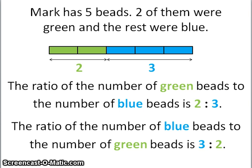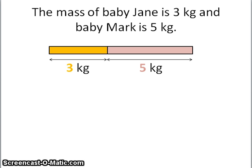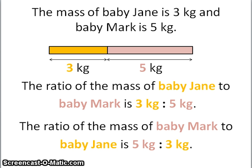Let's look at another example. The mass of baby Jane is 3 kilograms and baby Mark is 5 kilograms. So the ratio of the mass of baby Jane to baby Mark is 3 kg to 5 kg. And if you were to write it the other way around, the ratio of the mass of baby Mark to baby Jane is 5 kg to 3 kg.